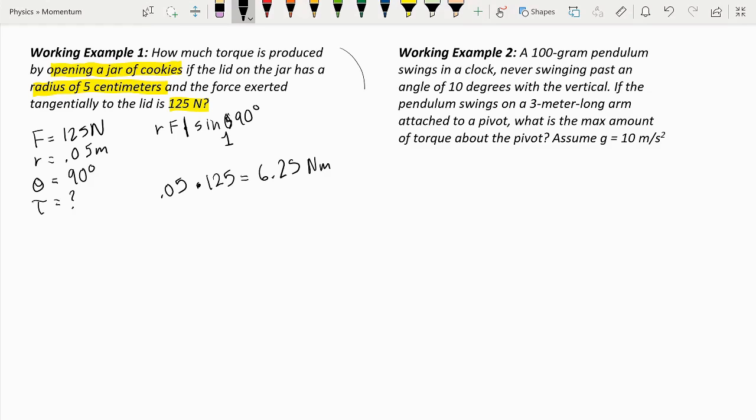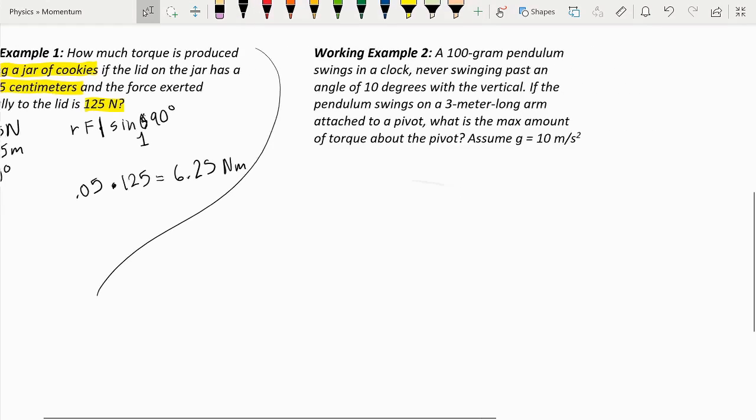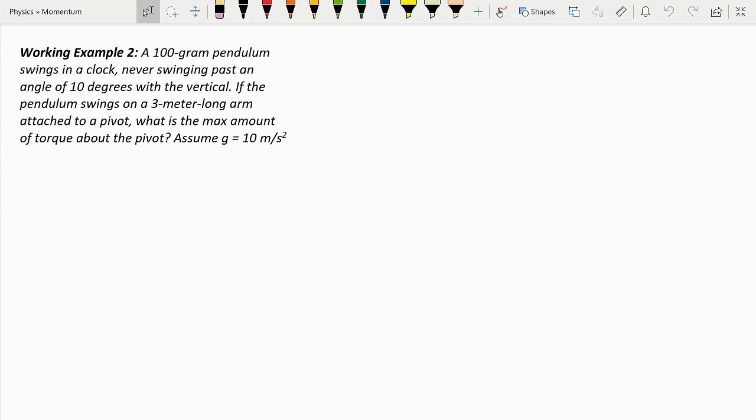Okay, now let's do working example number 2. A 100 gram pendulum swings in a clock, never swinging past an angle of 10 degrees with the vertical. If the pendulum swings on a 3 meter long arm attached to a pivot, what is the max amount of torque about the pivot? Let's assume that gravity is 10 meters per second squared.